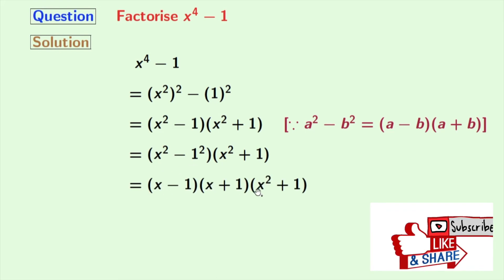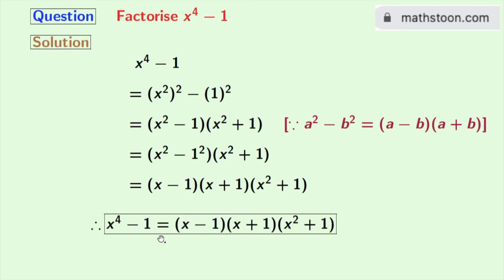And x square plus 1 remains same. Look that we cannot factorize this further, so our desired factorization of x power 4 minus 1 is x minus 1 times x plus 1 times x square plus 1.